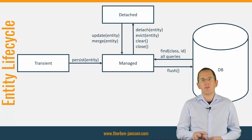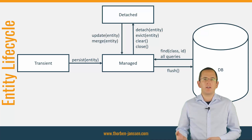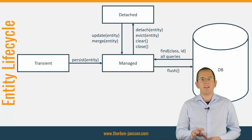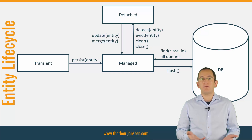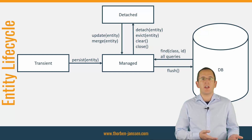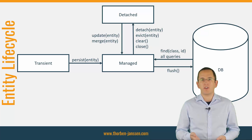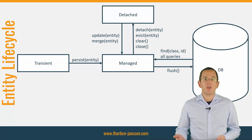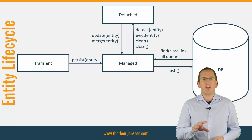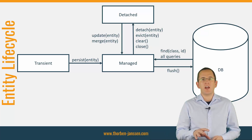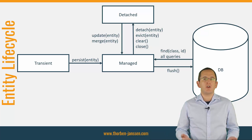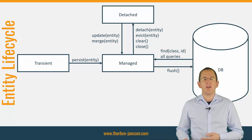An entity that was previously managed but is no longer attached to the current persistence context is in the lifecycle state detached. An entity gets detached when you close the persistence context. That typically happens after a request gets processed — the database transaction gets committed, the persistence context gets closed, and the entity object gets returned to the caller, who then retrieves an entity object in the lifecycle state detached. You can also programmatically detach an entity by calling the detach method on the EntityManager.